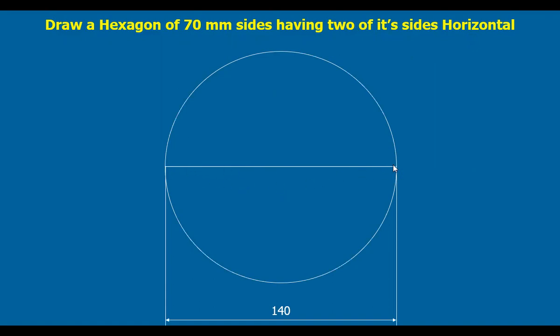Now we start with one point here, one end of this point on the diameter line. From here, with the 70mm radius or with the radius of the circle as radius 70mm, from here we go on marking points on the circle.